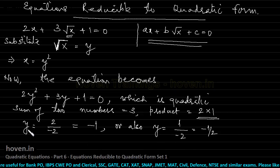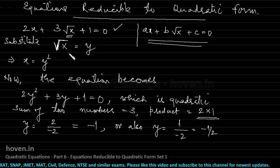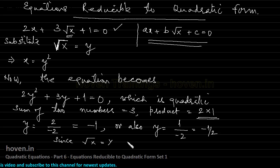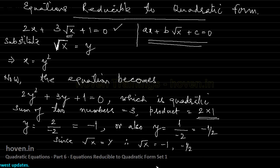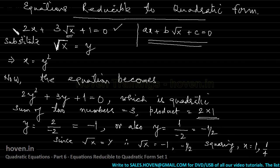I have obtained the values of y as −1 and −½. But my objective is not to find y — my objective is to solve the original equation for x. So I will use this substitution again. Since √x = y, therefore √x = −1 or √x = −½. Squaring, we get x = (−1)² = 1 and x = (−½)² = ¼. So 1 and ¼ are the solutions of the original equation.